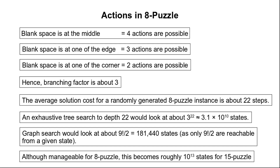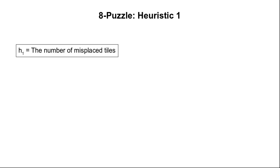For the 8 puzzle, graph search may need to generate only 181,440 states, which is not a very large number and uninformed algorithms may be able to solve the problem. However, for the 15 puzzle, even graph search may need to look at about 10 to the power 13 states, and uninformed search may take a very long time. So we need to look at informed search, and to use it for the 8 puzzle problem we need heuristic functions.